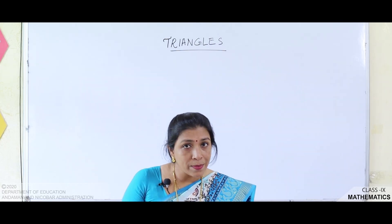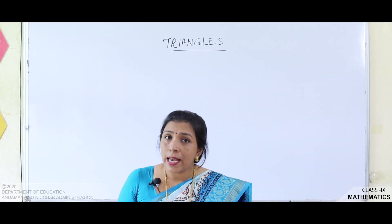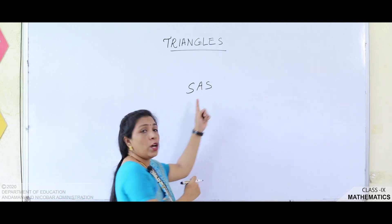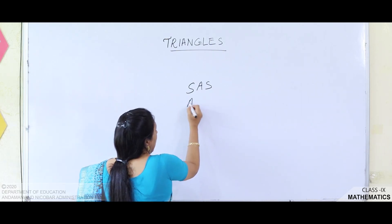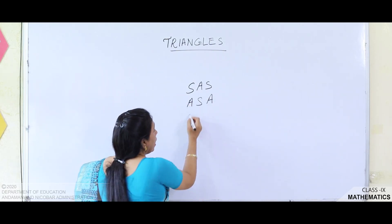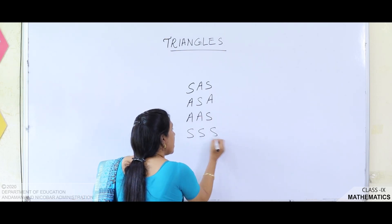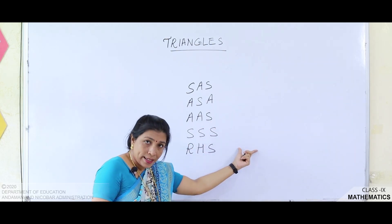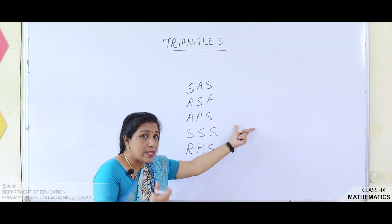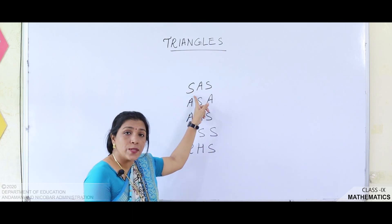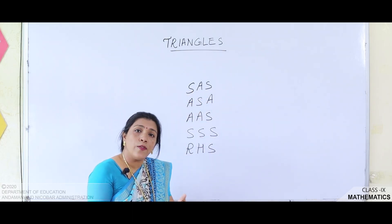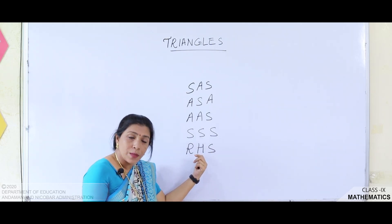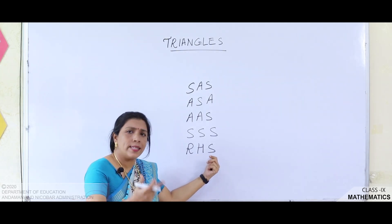The first one was SAS congruence condition, the second one ASA, the third one AAS, then we had SSS, and the last one was RHS. These were the five congruence conditions. Here S stands for side, A stands for angle, and in RHS, R means right angle, H is hypotenuse, and S is any one side.